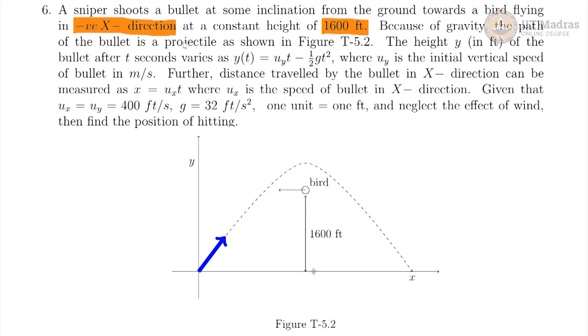Because of gravity, the path of the bullet is a projectile as shown in this diagram. This is the bullet that is going in this particular parabolic path and this is the bird which is going in the negative x direction at a constant height of 1600 feet.